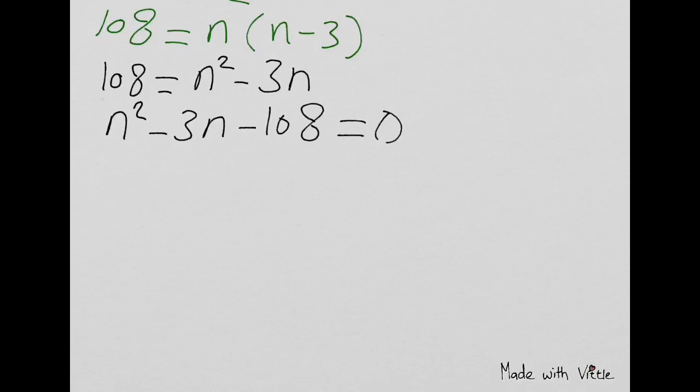Let us solve this equation by factoring. Think of two numbers whose product is negative 108 and their difference is negative 3. The two numbers are negative 12 and positive 9. So the two factors are n minus 12 times n plus 9 equals 0.